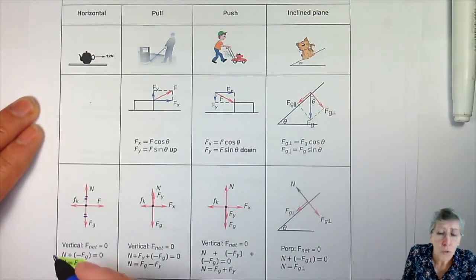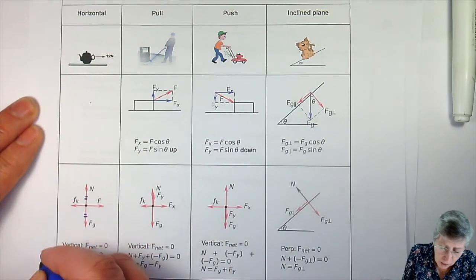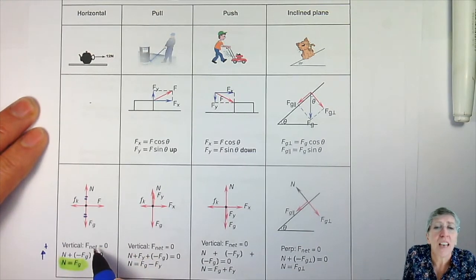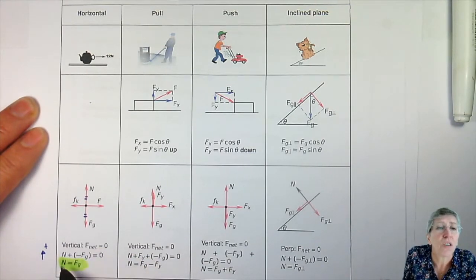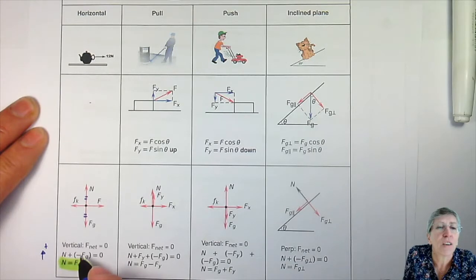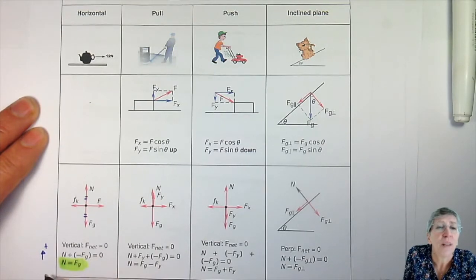So you have to say normal force equal to gravity. If you wanted to write it down neatly, you could have said upwards as positive - the net force is adding all the forces together. So you've got your normal force upwards, plus minus the gravitational force, because that is in the negative direction.